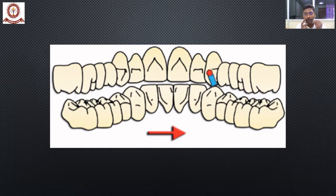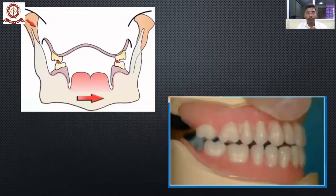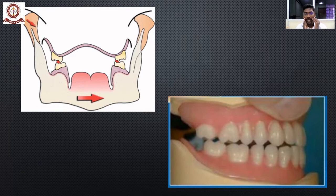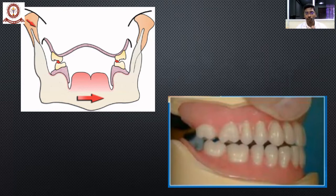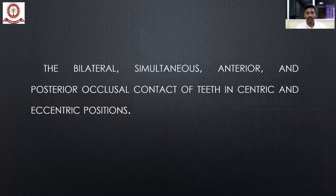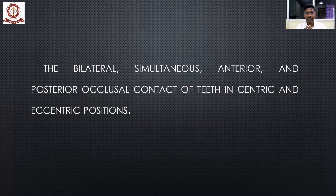To prevent this dislodgement, whenever teeth come into contact on the right side, the teeth on the left side must also come into contact simultaneously. This is called balanced occlusion and must be maintained in complete dentures, since the denture is not fixed to any bone or tooth. The definition is: bilateral simultaneous contact of the posterior occlusal surfaces of teeth in centric and eccentric relation.